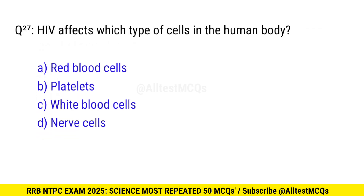Question 27. Which HIV affects which type of cells in the human body? Right option is C, white blood cells.